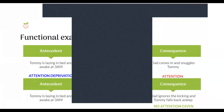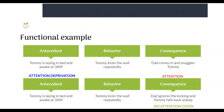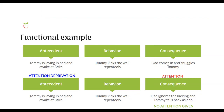The four functions of behavior are attention, escape, access to tangible items, and automatic sensory. When dealing with behavior at home, think about the ABCs: what happened before, what was the behavior, and what happened after? Once you can determine the function of your child's behavior, you can start to think of strategies for how to handle it.